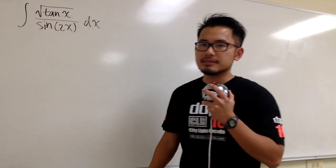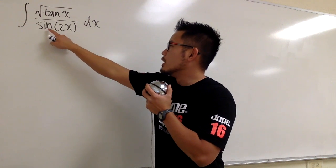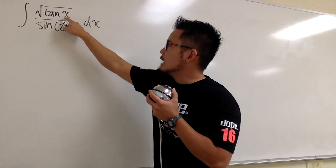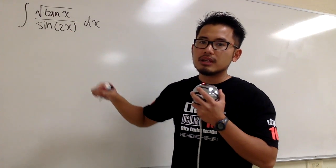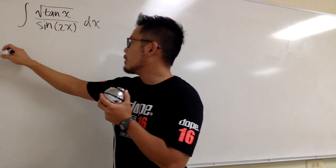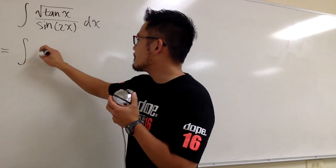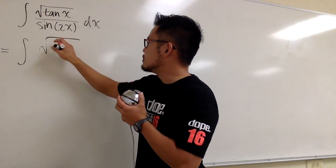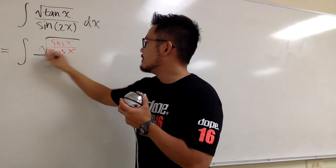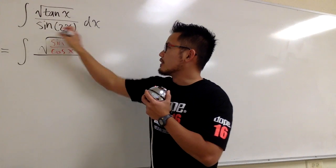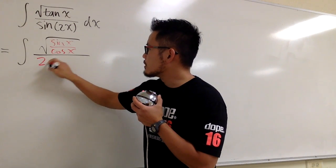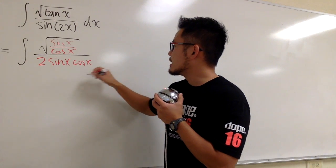I'm going to fix the tangent x. The other trouble is that we have sine of 2x — this is the double angle. The tangent was just x, but this was 2x. So we are going to break this apart and get to work on fixing both of those two parts. On the top, the square root of tangent x is the square root of sine x over cosine x. For the denominator, sine of 2x — we know the double angle identity — that's going to be 2 sine x cosine x.